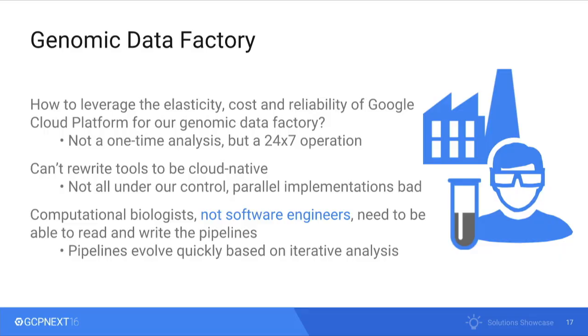How do we leverage the elasticity, cost, and reliability of Google Cloud Platform for our genomic data factory? This isn't a one-time experiment — it has to run 24/7. We can't rewrite all the tools to be cloud-native; parallel implementations are undesirable. And we'd like our computational biologists and scientists — not the software engineers — to be able to read and write these pipelines, which evolve quickly.